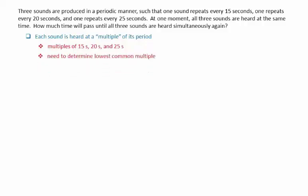That means we need to figure out the lowest common multiple of these numbers. We're going to use the prime factorization method, where we find all the prime factors of each of these numbers.